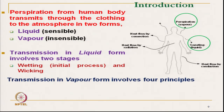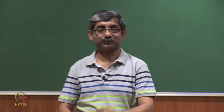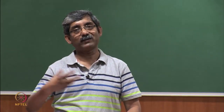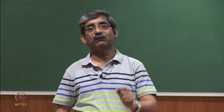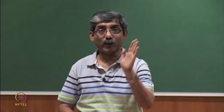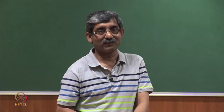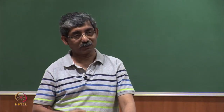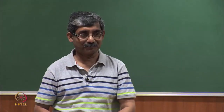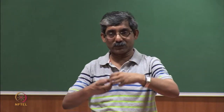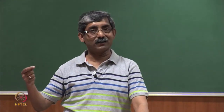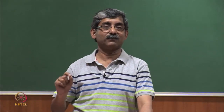In our discussion, we will first discuss in detail the liquid transmission form, and then we will discuss the vapour transmission. If we see the liquid transmission, it takes place in two stages. In the first stage, when liquid comes into contact with the fabric surface, the fabric has to first get wet. That means the liquid — which in clothing comfort is sweat — should wet the fabric. Wetting here means the liquid has to penetrate inside the structure; that is the first requirement for liquid transmission.